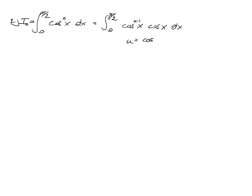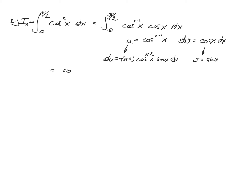We write the integrand as cosine to the power n minus 1 of x times cosine x. Set u equal to cosine to the power n minus 1 of x, and dv equal to cosine x dx. Then du equals n minus 1 times cosine to the power n minus 2 of x times minus sine x dx, since the derivative of cosine is minus sine. And v equals sine x.